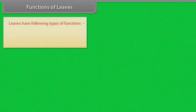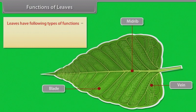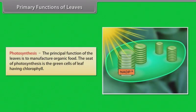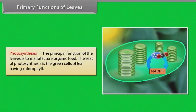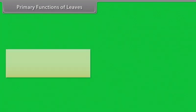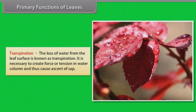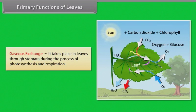Functions of leaves. Leaves have the following types of functions: primary or main functions and secondary or accessory functions. Primary functions: photosynthesis — the principal function of leaves is to manufacture organic food; the seat of photosynthesis is the green cells of leaves having chlorophyll. Transpiration — the loss of water from the leaf surface is known as transpiration; it is necessary to create force or tension in the water column and thus cause ascent of sap. Gaseous exchange — it takes place in leaves through stomata during the processes of photosynthesis and respiration.